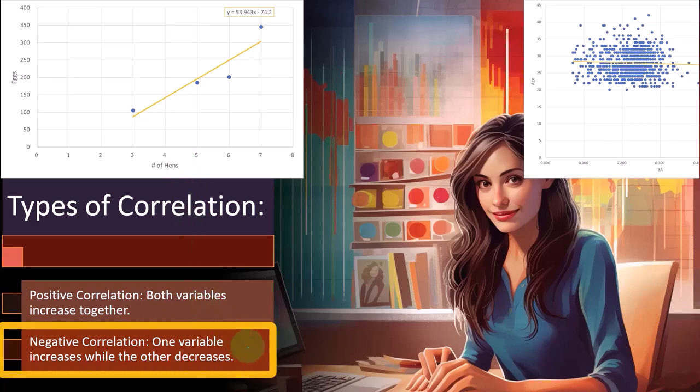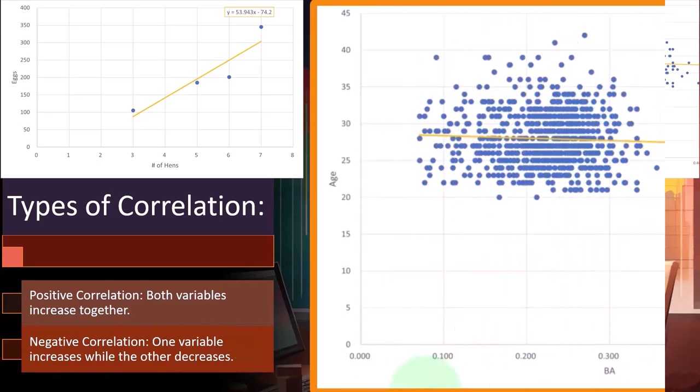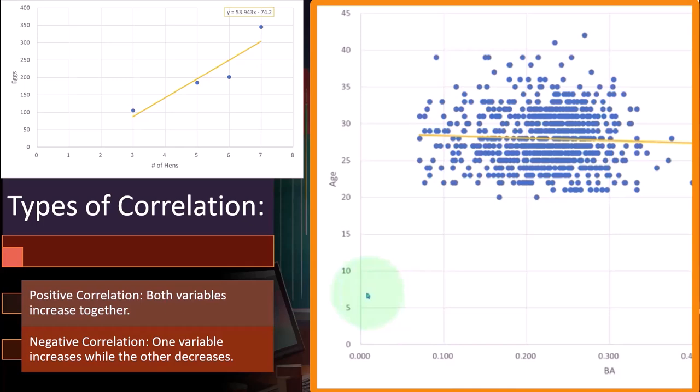All right, a negative correlation: one variable increases while the other decreases. So in this case, we're talking about age and batting averages. The age of a baseball player is going up, and as